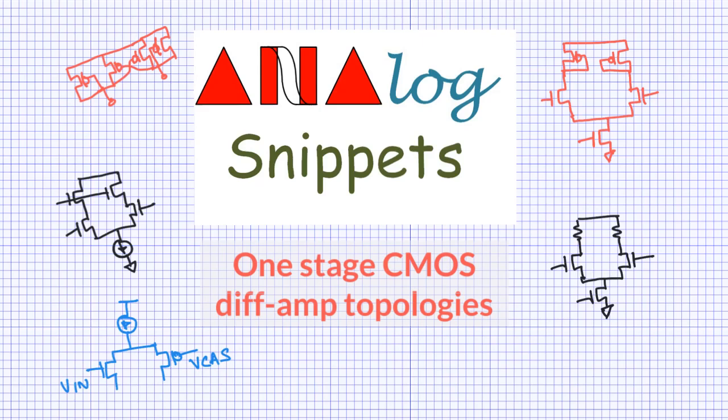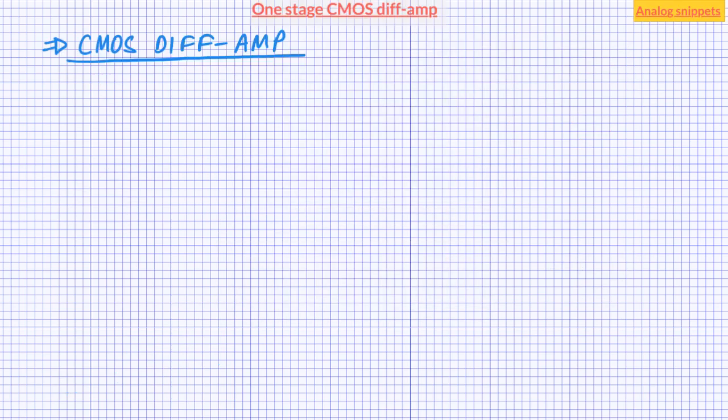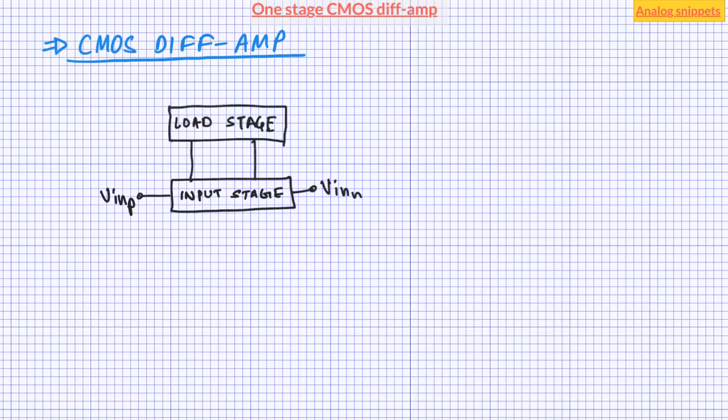This video talks about various CMOS differential amplifier topologies. Differential amplifier is probably the most used analog sub-block. A typical differential amplifier contains a differential input stage, a load stage, and in most cases a bias stage.